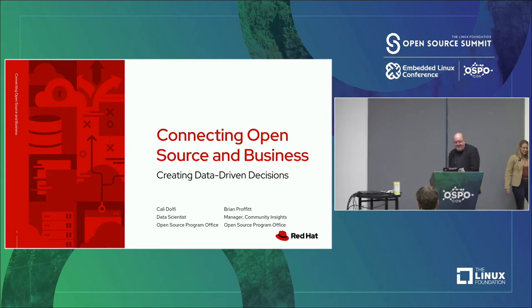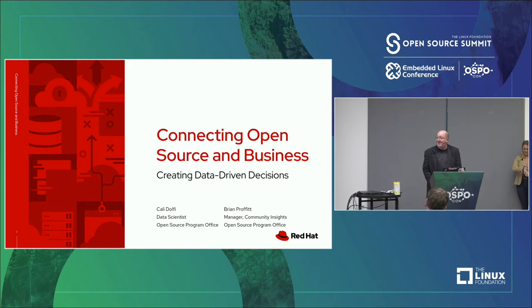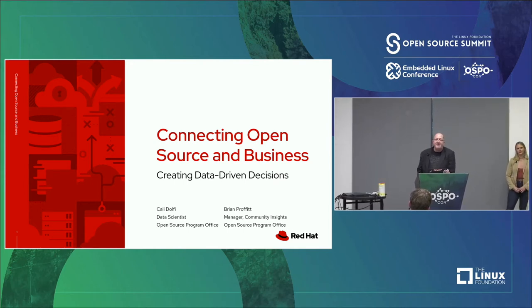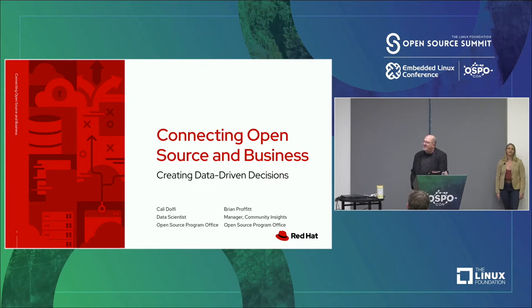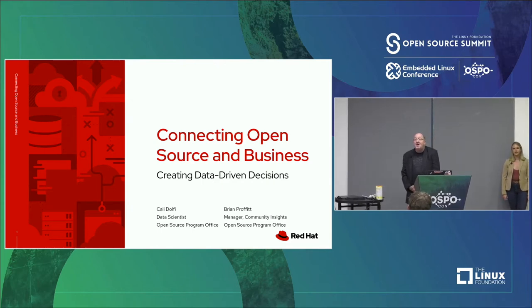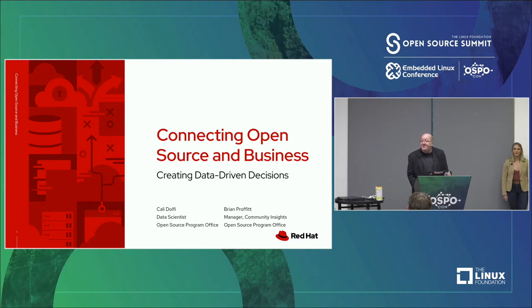And as Kelly said, my name is Brian Profitt. We are both from the Open Source Program Office at Red Hat, and we are both on the Community Insights team. This is a new team within OSPO that is really designed to quantitatively measure the health of communities. Recently, we've been working to expand our efforts and go beyond individual communities and start looking at ecosystems, and also the interface between community and business. And that is what we are going to be talking about today.